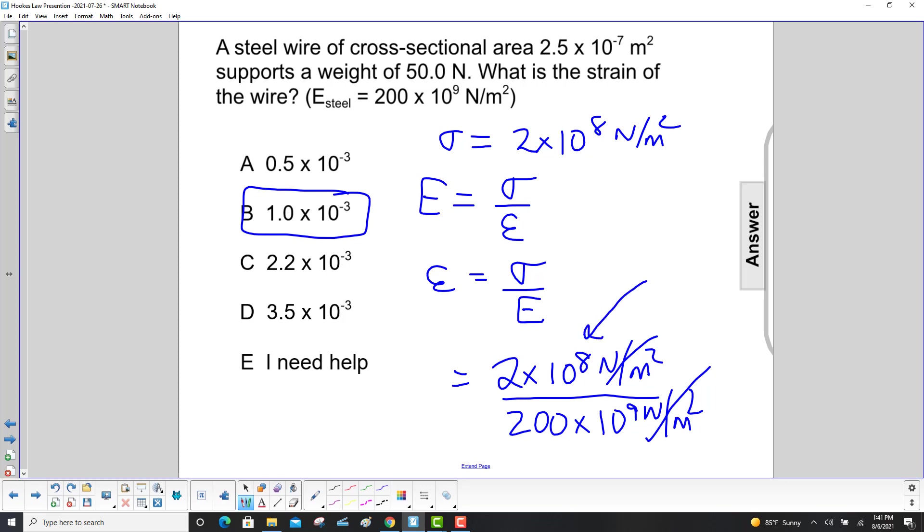once you get to here, you're dividing 2 by 200, so that's going to be a 1 somewhere. None of the other answers have the 1, so you don't even have to finish the calculation if you're in a hurry. So our answer is B.